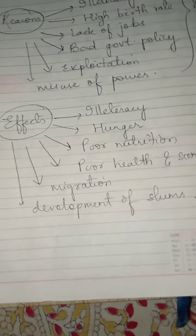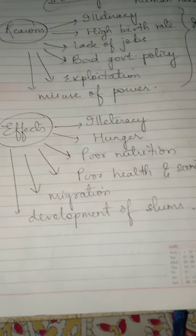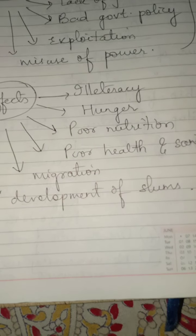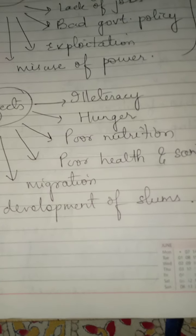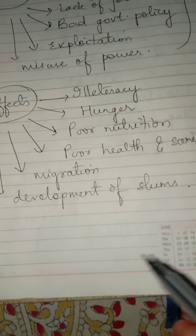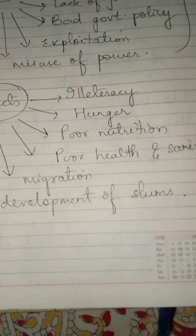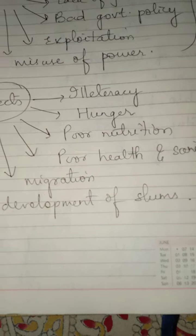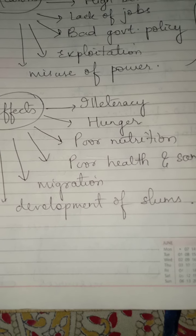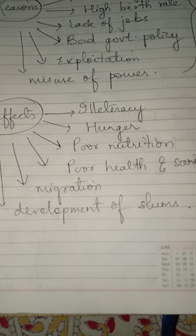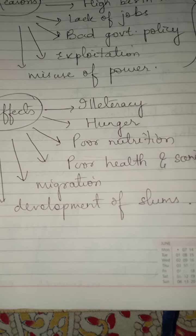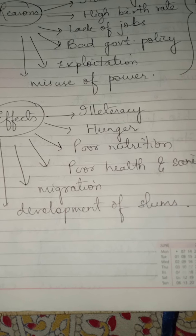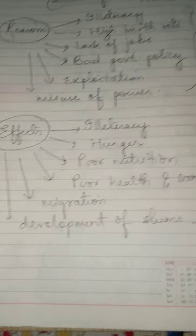People migrate to various places in search of job opportunities, which leads to migration and sometimes refugees. The last effect is development of slums — people unable to afford high-class living form bustee areas or slums, where there is improper sanitation, improper health, and no proper way of upbringing.